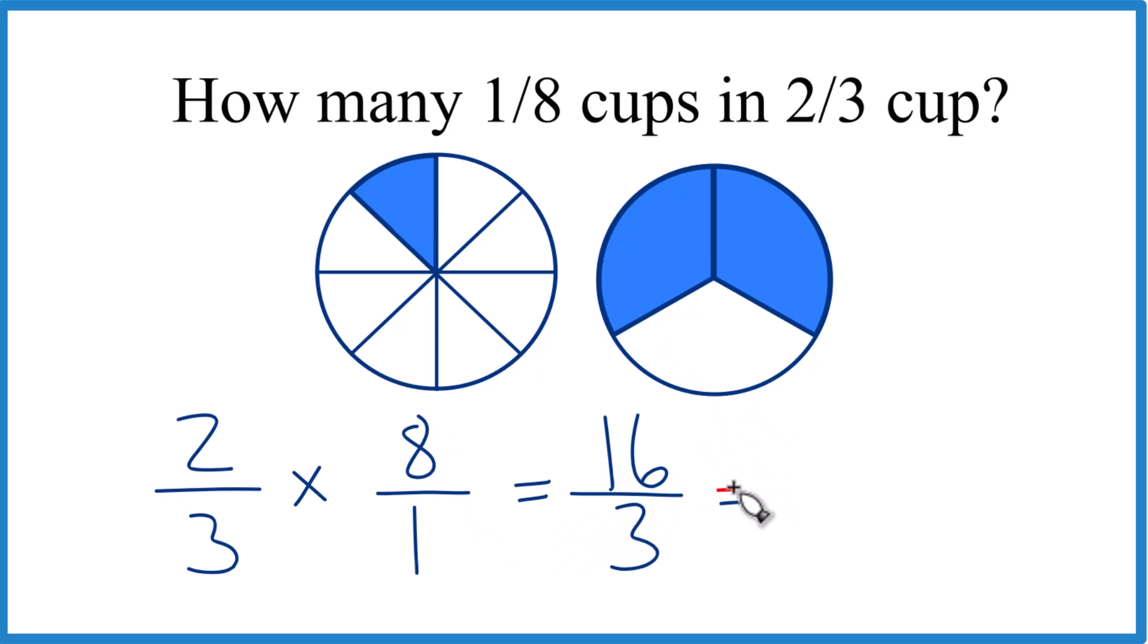Let's change this to a mixed number that might be a little easier to look at. Three goes, let's see, five times three is fifteen. So we'd have one left over and then bring the three across.